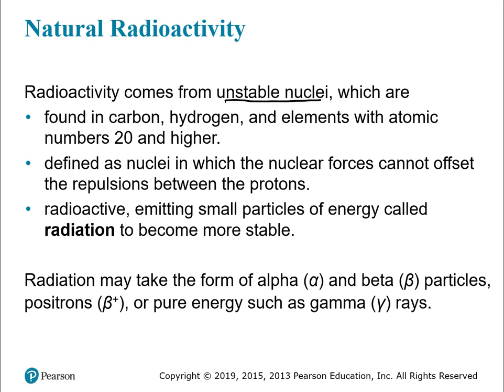Anything with an atomic number of 20 or higher can have an unstable nucleus. An unstable nucleus is one where the nuclear forces keeping the nucleus together cannot offset the repulsions between the protons — which are all positively charged. When those forces cannot offset the repulsions, you get an unstable nucleus. They emit small particles of energy called radiation — in the form of alpha or beta particles, positrons, or pure energy like gamma rays.